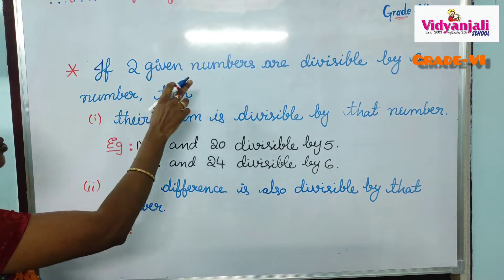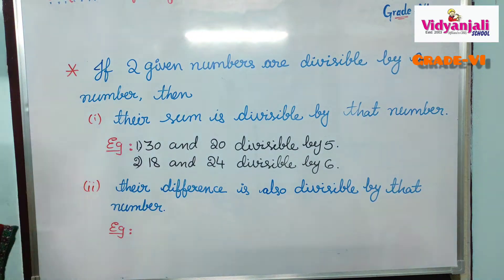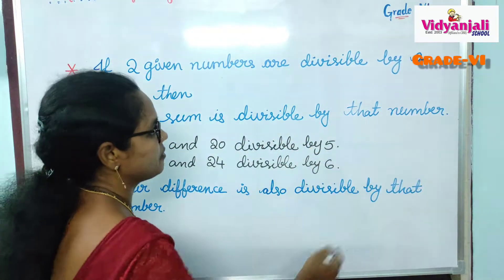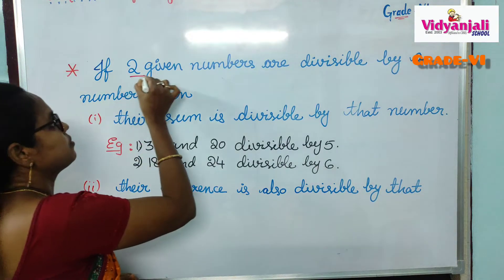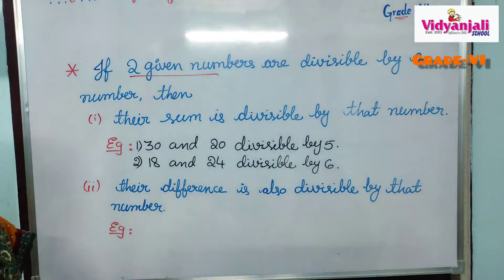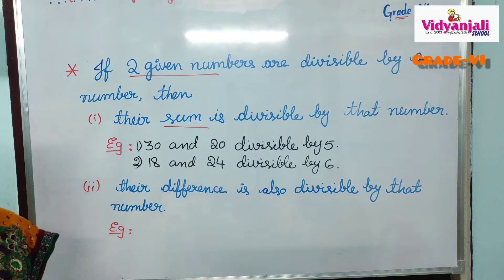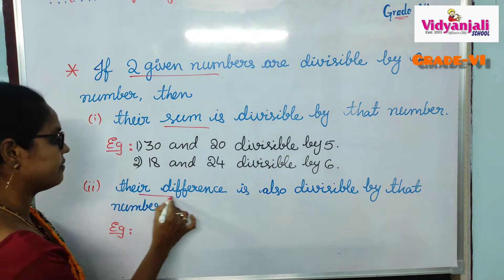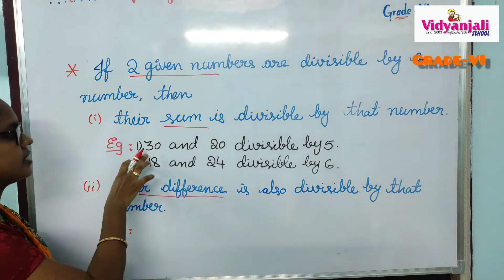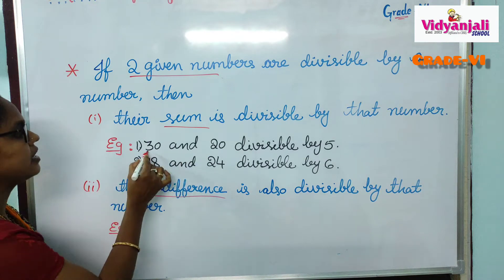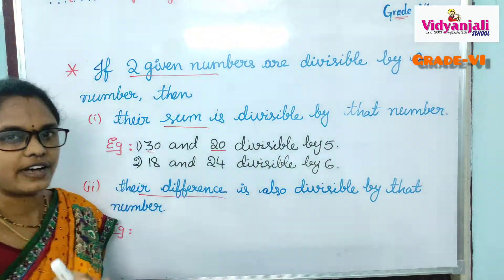Next rule: if 2 given numbers are each divisible by a number, then their sum is also divisible by that number. For example, 30 and 20 are both divisible by 5 — 5 sixes are 30, and 5 fours are 20.